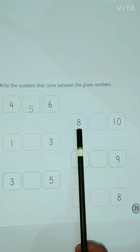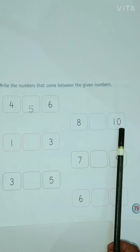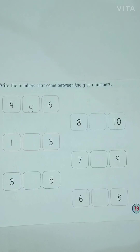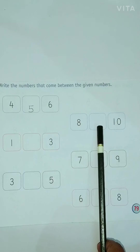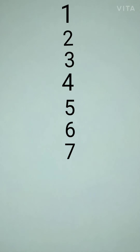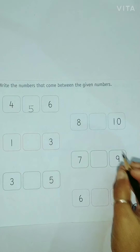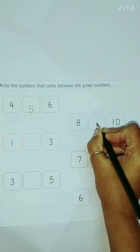Now, children, which number is this? 8. And which number is this? 10. Which number comes after 8 and before 10? 9. Let us count: 1, 2, 3, 4, 5, 6, 7, 8, 9, 10. Which number comes after 8 and before 10? 9, right? So now we will write 9 over here.